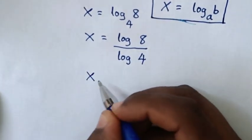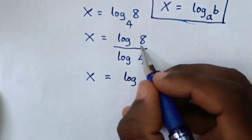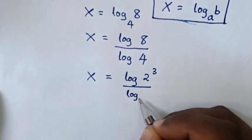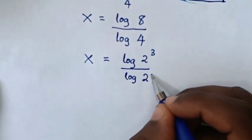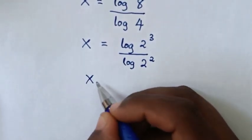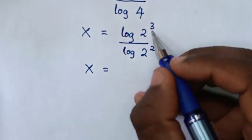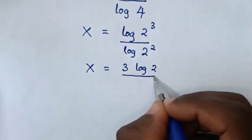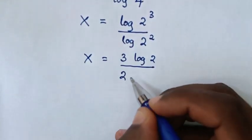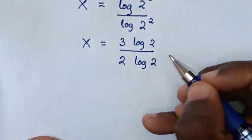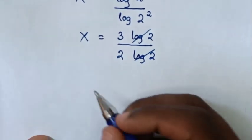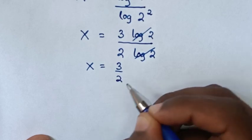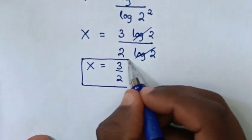Then in the next step, x is equal to log of 8, which is the same as 2 power 3, over log of 4, which is the same as 2 power 2. Then x is equal to log of 2 — the power of 3 will move to the base, so it will be 3 log of 2, over the power of 2 moving to the base, giving 2 log of 2. Then log of 2 cancels each other, so x is equal to 3 over 2. Therefore, this is the final answer for the value of x.